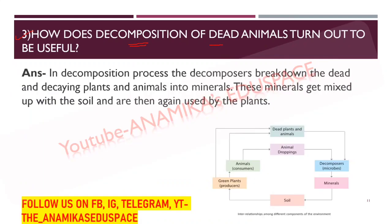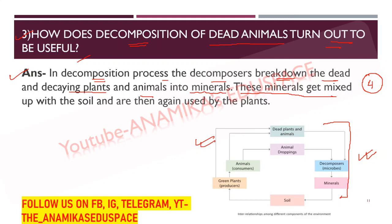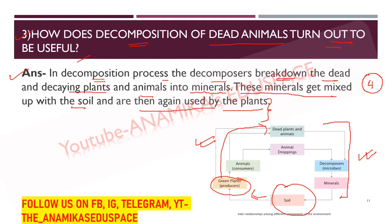How does decomposition of dead animals turn out to be useful? In the decomposition process, decomposers break down dead and decaying plants and animals into minerals. These minerals get mixed with the soil and are then used up by plants again. You can refer to the diagram in the book and draw it when this question is asked — it shows this cycle clearly.